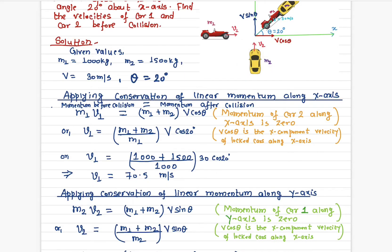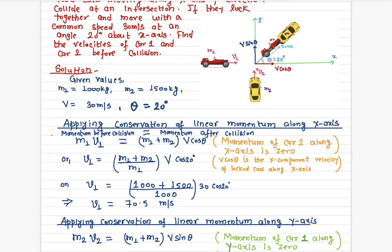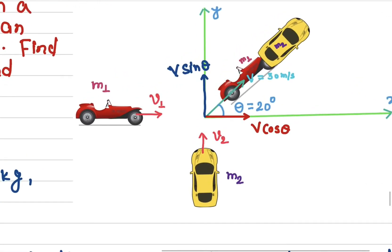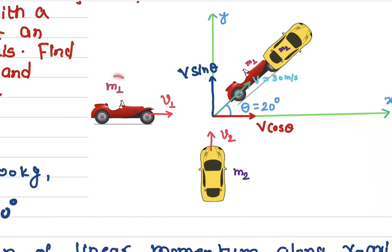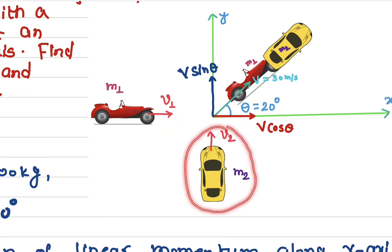To find the speed of car two, we apply the momentum equation along the y-axis. The momentum of car one along the y-axis is zero because it is moving only along x. The momentum of car two along the y-axis is m2 times v2.